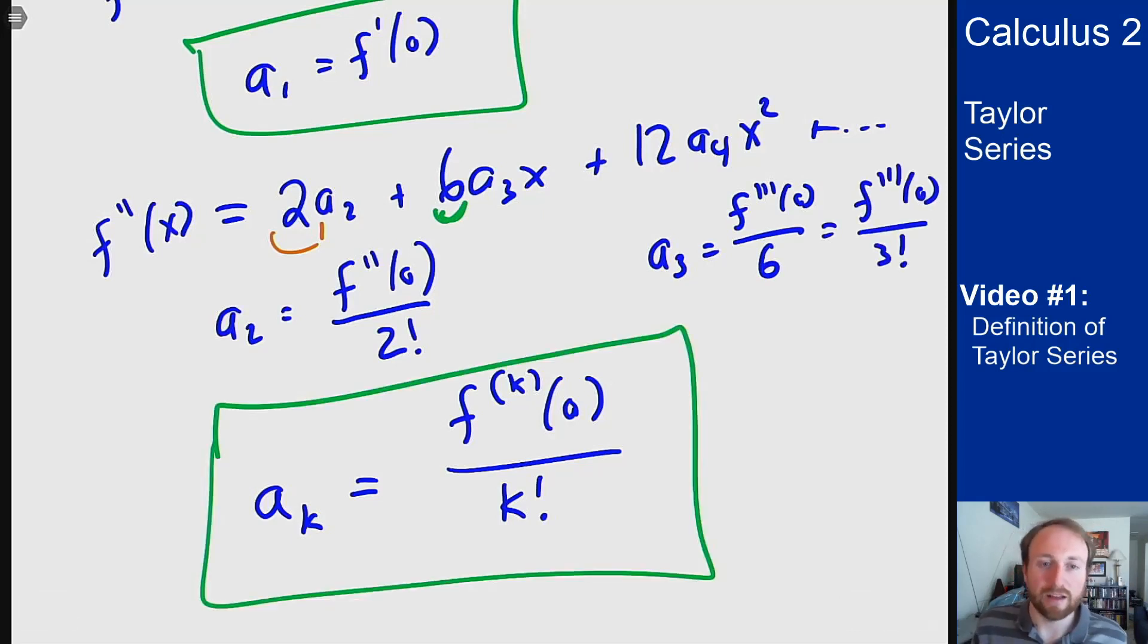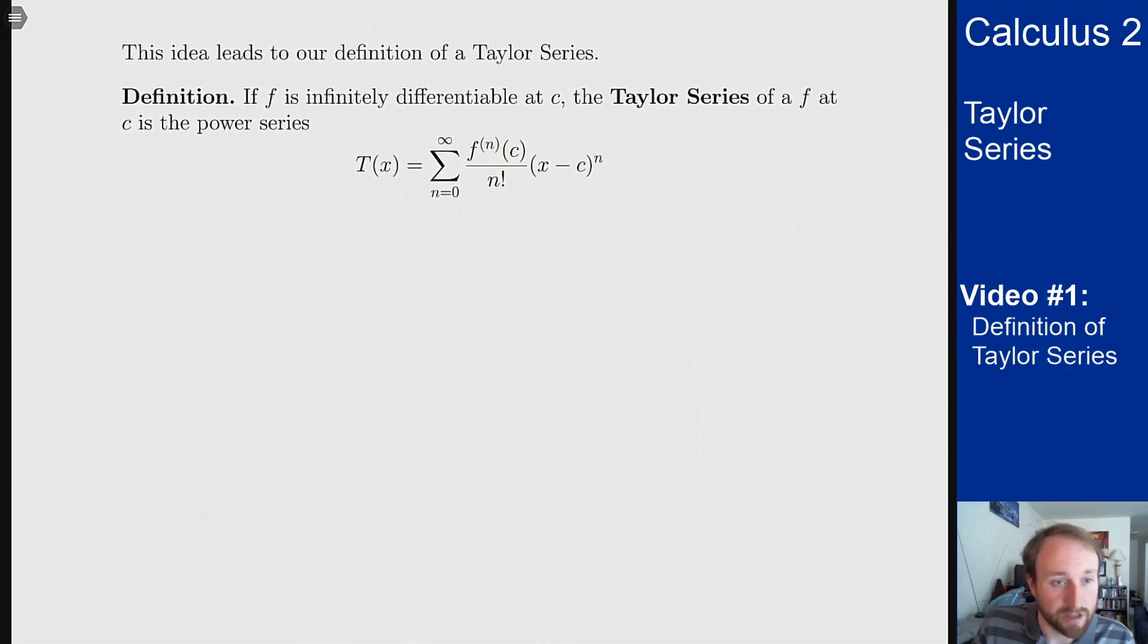So that's the key idea here that if I know that my series converges to f then I can find the coefficients a_k in terms of the function f itself. And this gives us our idea of a Taylor series.